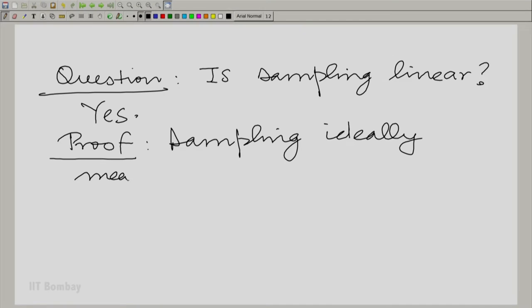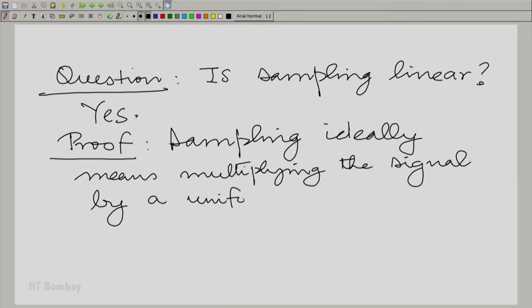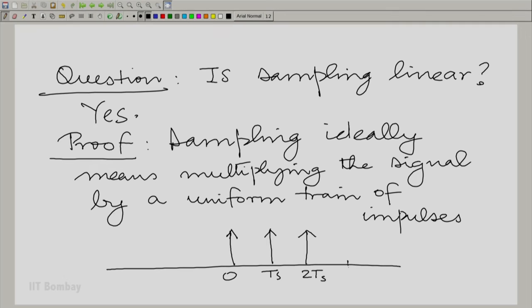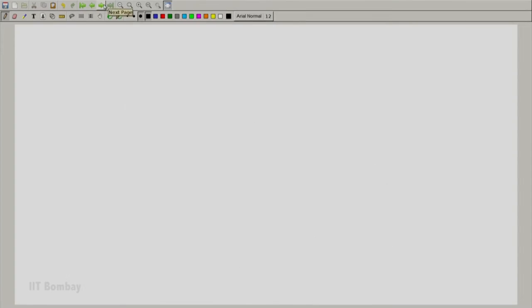What is sampling after all? Sampling means multiplying—I mean, I am talking about ideal sampling. Sampling ideally means multiplying the signal by uniform train of impulses. How does that train look? There is an impulse at 0, there is an impulse at Ts, and you can continue this at every multiple of Ts. Let us call this uniform train of impulses p(t). So, essentially, sampling of x(t) means multiplication of x(t) by p(t), so simple.